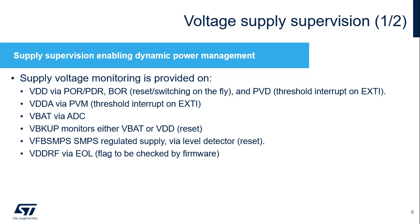The main VDD supervision allows reset management and voltage detection via the power voltage detector, or PVD, when VDD crosses the selected threshold. The PVD can be enabled in all modes except standby modes. Seven thresholds can be selected by software. The brownout level can be used to provide switching on the fly of the SMPS when VDD drops below the threshold level. On the analog VDDA supply, a supervision circuit selected via PVM detects when VDDA crosses a threshold. The PVM can be enabled in all modes except standby modes. On the SMPS VFBS-MPS supply, a supervision circuit will reset the core when the supply is too low — less than 1.4 volts.